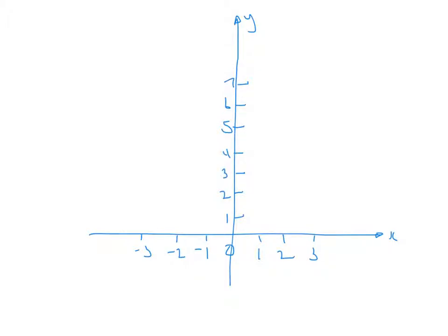Now, if we plotted the first point, the first point is negative 3, 7. The second point was negative 2, 6. So, it was about here, negative 2, 6.